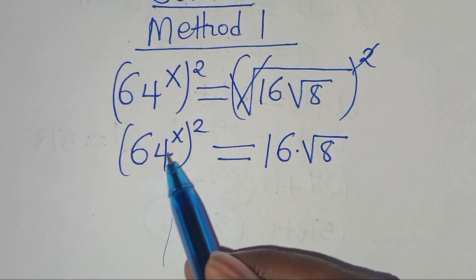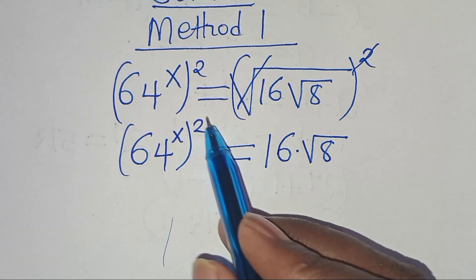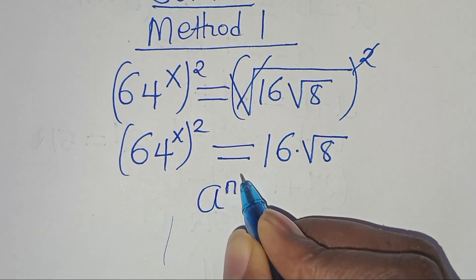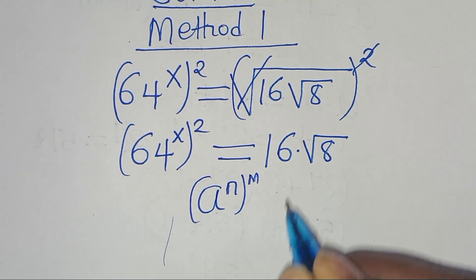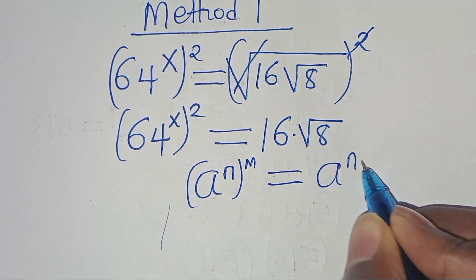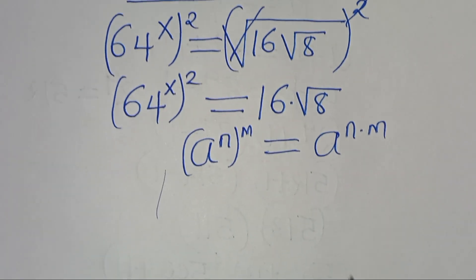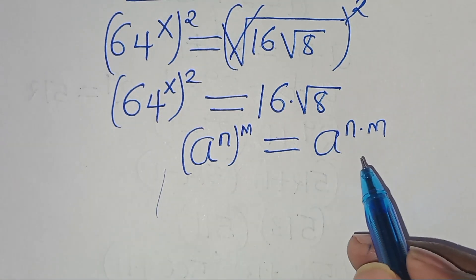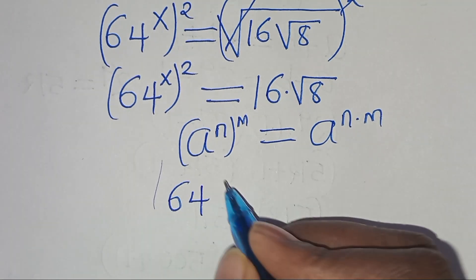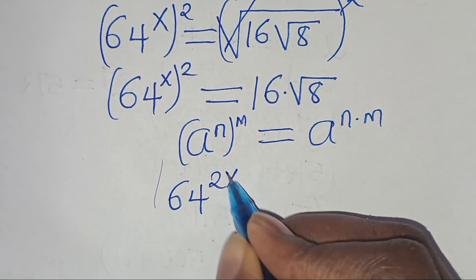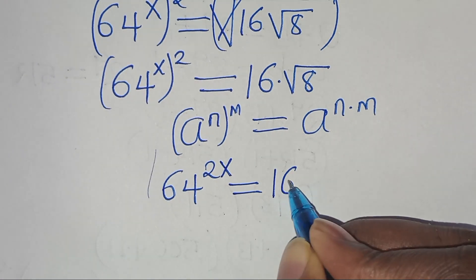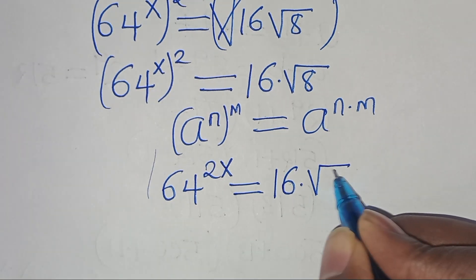Now, 64 raised to the power of x, raised to power 2, this is in the form of a to the power of n, raised to power m, which we can express as a raised to the power of n times m. Applying this exponent property, then here we have 64 raised to power 2x, this is equal to 16 multiplied by square root of 8.